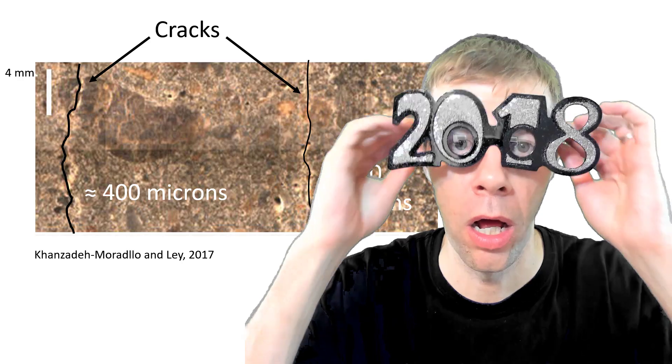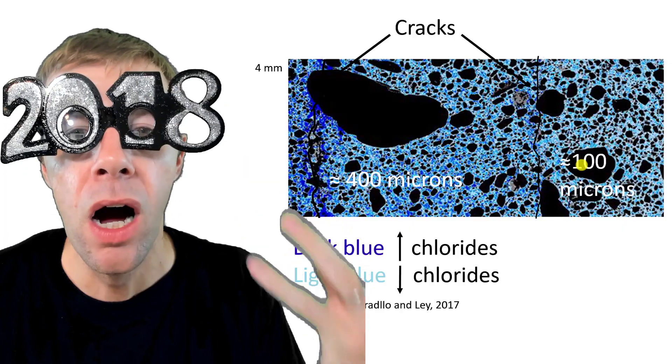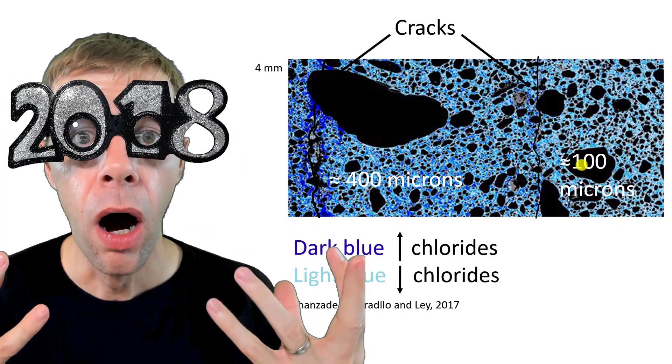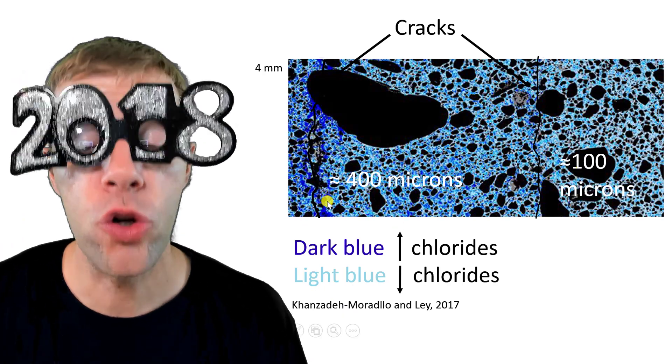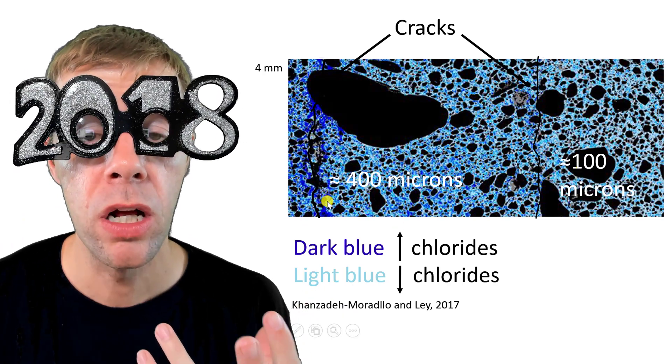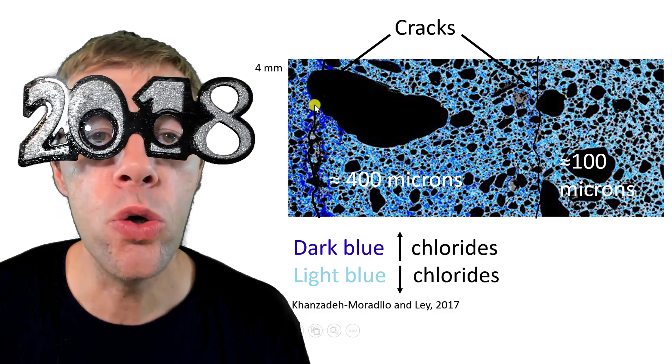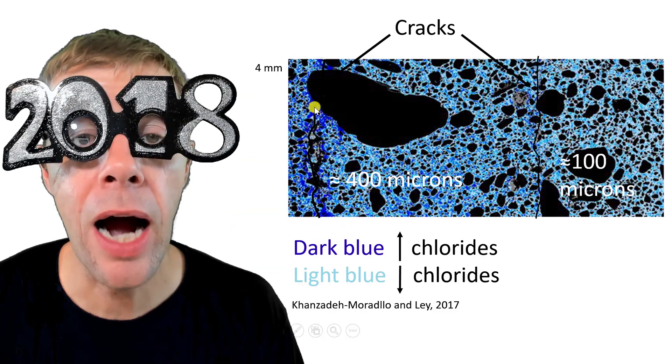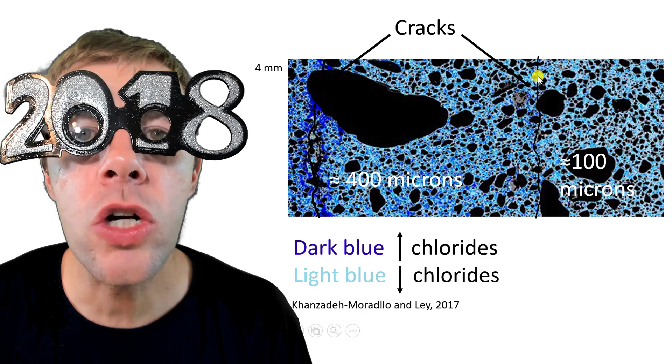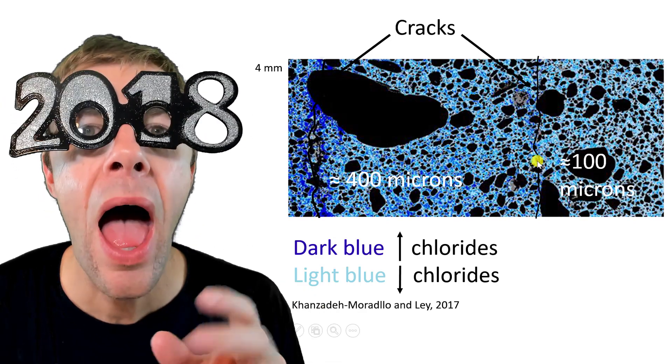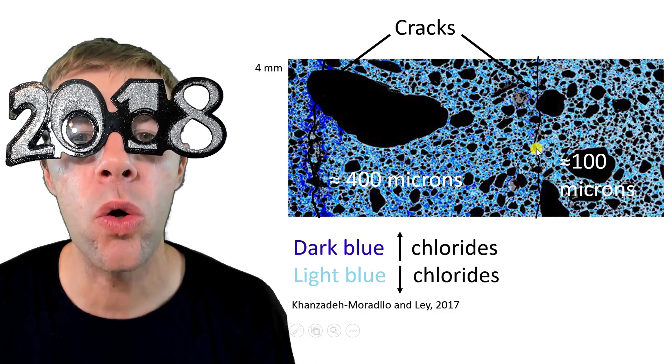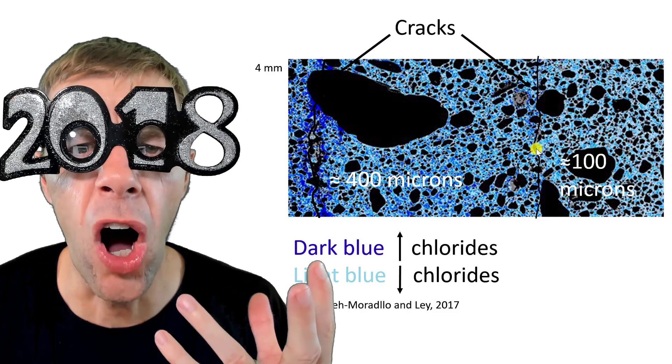We need our chemical glasses. Let's get them on. We can see. Oh, look. On the left, where the crack is much larger, look at the dark blue. Remember dark blue? That means higher amounts of chlorides. And look at the smaller crack. It's tighter. And we don't see near as many chlorides in there. What's going on?